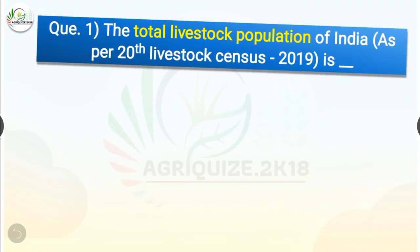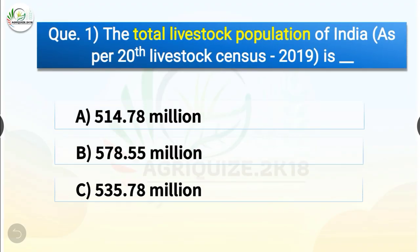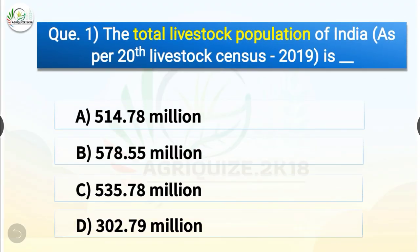Question number 1. The total livestock population of India as per the 20th livestock census 2019 is dash. The options are 514.78 million, 578.55 million, 535.78 million or 302.79 million. The correct answer is option C, 535.78 million. So the total livestock population of India as per the 20th livestock census 2019 is 535.78 million.